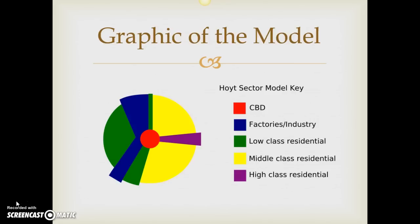Then we've got large areas that are middle class, a little bit wealthier. Just like with the Concentric Zone Model, the properties are a little bit bigger, the houses are a little bit nicer, and the property values are higher. And then the smallest segment of all — the purple one — is our high-class residential. You'll notice that it is the furthest away from the factories and also the furthest away from the poor areas. It's unusual, especially in North America, to see rich areas right next to poor areas. That's something you see if you travel internationally in large areas of the developing world, but not really in the developed world.